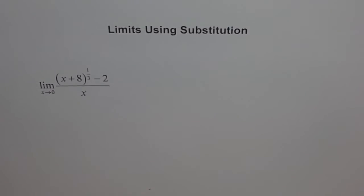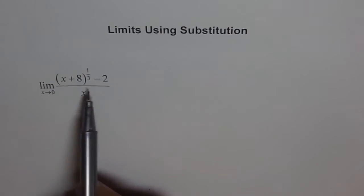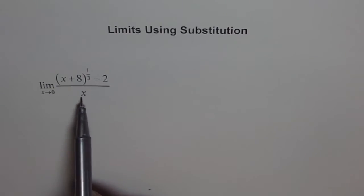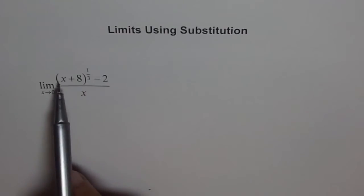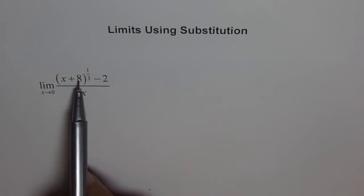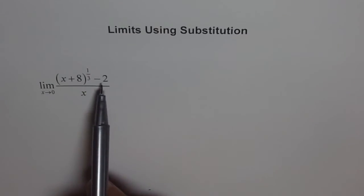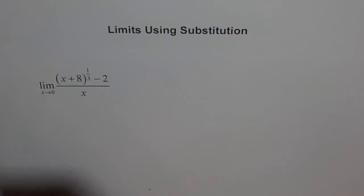Let us explore how substitution helps to find limits. In this function given here, if I substitute 0 for x, then I get 0 in the denominator, and 0 plus 8 is 8, and cube root of 8 is 2, 2 minus 2 is also 0. So I land up with something like 0 over 0, which is an indeterminate form.